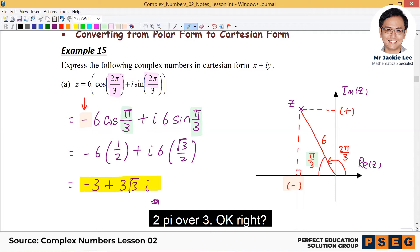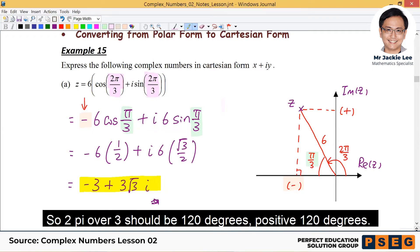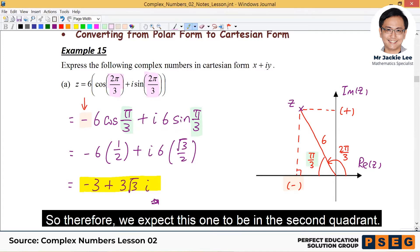2π over 3, π is 180. So 2π over 3 is 120 degrees, positive 120 degrees. So therefore, you expect this one to be the second quadrant.